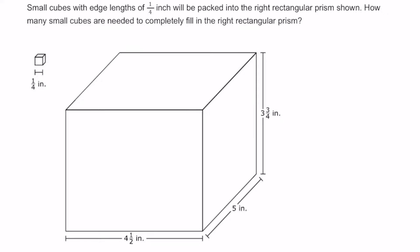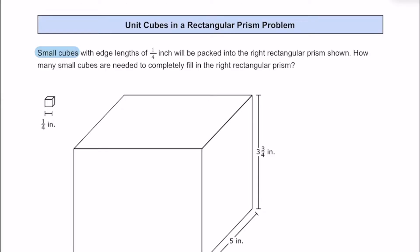Let's take a look at a geometry problem where we're going to see how many of these little unit cubes we can fit in a right rectangular prism together. We're going to be taking these small cubes that have edge lengths that are one quarter inch each, and what we're trying to figure out here is how many of these little cubes can we fit inside of the right rectangular prism below.